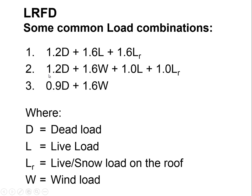Another load combination is 1.2D + 1.6W + 1.0L + 1.0LR. We apply a large safety factor on wind because we're focusing on its negative effects, but we still assume a fairly substantial live load. However, it would be extraordinarily rare for a building to have a full live load during a hurricane. So rather than applying 1.6 on live, we put 1.6 on wind and take the full live load for floors and roof at 1.0.